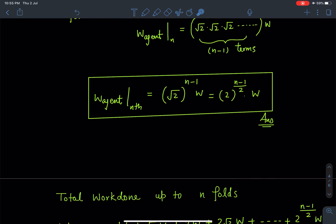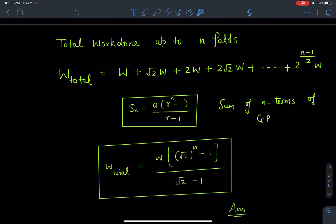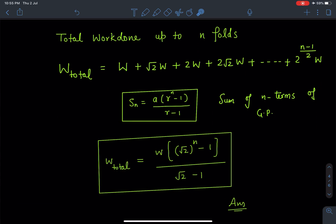Let's move to the next part of this question where they are asking us about total work done up to n folds. So W_total will become W + √2W + 2W + 2√2W and so on, and the last term is going to be for nth folding: this work done is 2^(n-1)/2 times W. This we have calculated in the previous part.